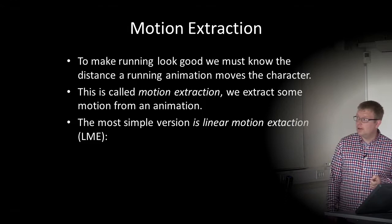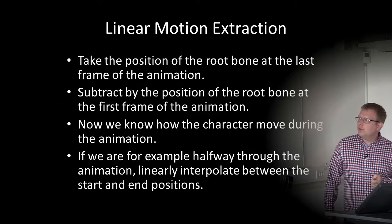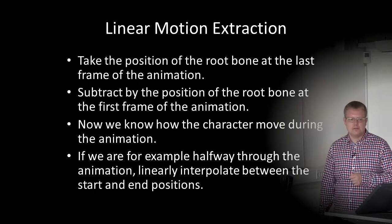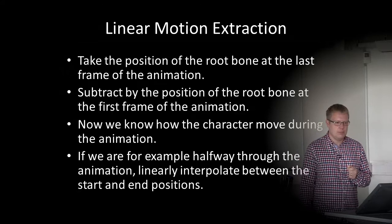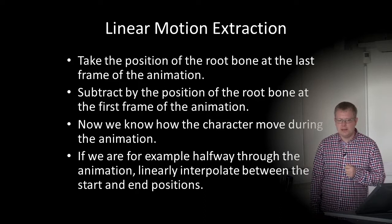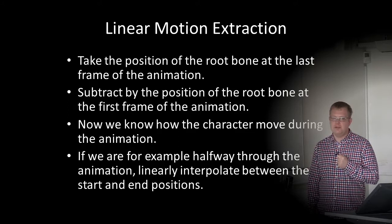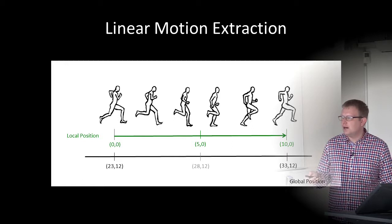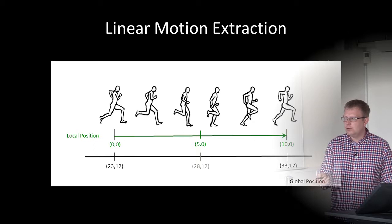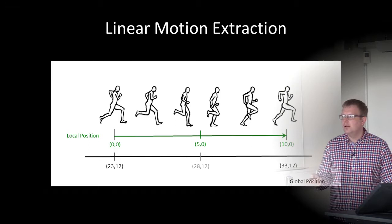The simplest version is linear motion extraction. Take the position of the root bone at the last frame of animation, subtract the position of the root bone at the first frame, and now we know how far the character moved. If we are halfway through the animation, we linearly interpolate between start and end positions. The local position starts at zero, halfway it's at 5, and at the end it has moved 10 steps in x. The global position is changed accordingly, so the character actually runs in the global game world.